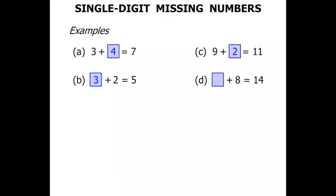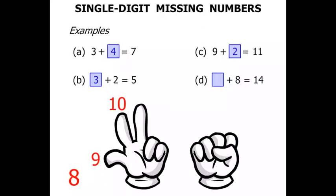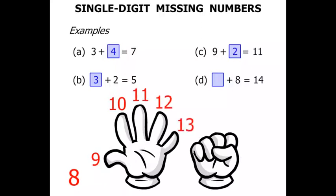The next one, something plus 8 equals 14. Well we might need 2 hands for this one. So something plus 8 equals 14. Let's start with the 8 and we've got to get to 14. So we're thinking 8, 9, 10, 11, 12, 13, 14. So we needed the other hand that time. How many fingers up? 6 all together. So 6 is our answer.